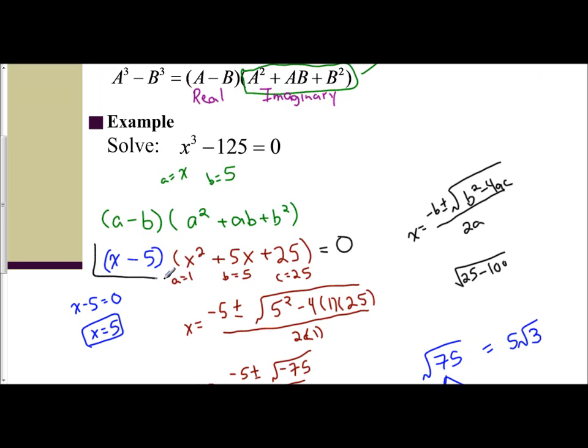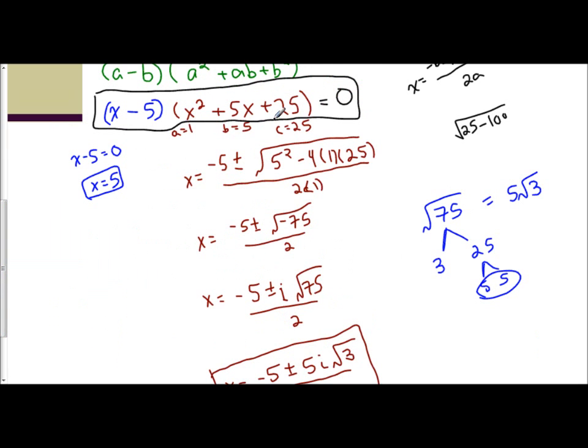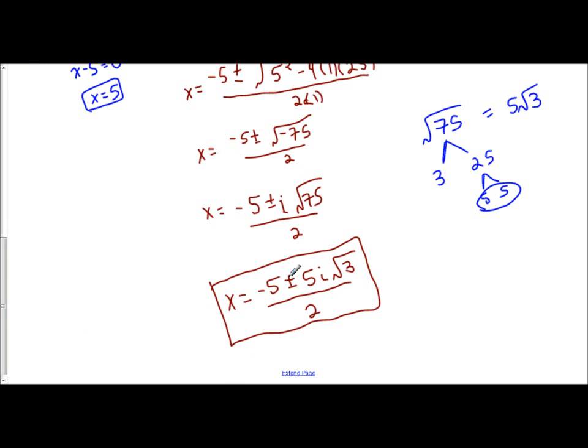So break it apart into factored form like we did here. Box it, circle it, so you can see what it is. And then from there, solve. The real one, easy. The quadratic one, you have to use the quadratic formula. And you will have an i in your answer because it is imaginary. So just refresh on this, take it in, and then move forward on the next two examples.